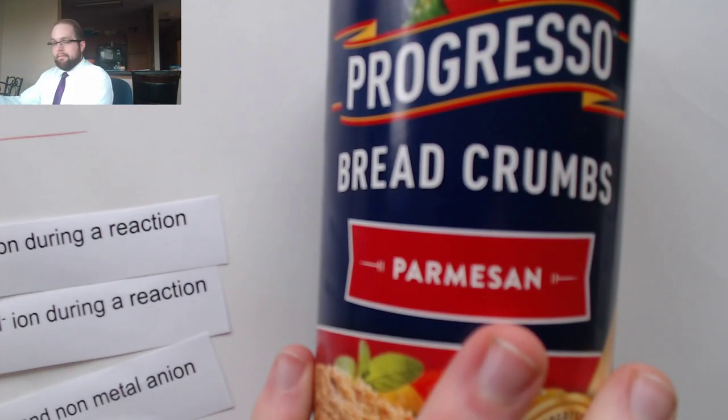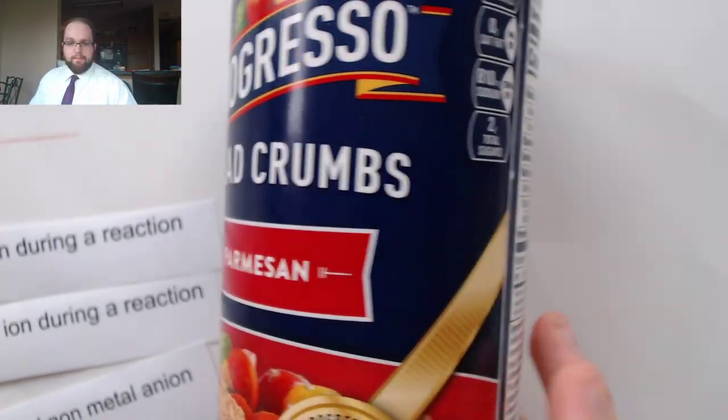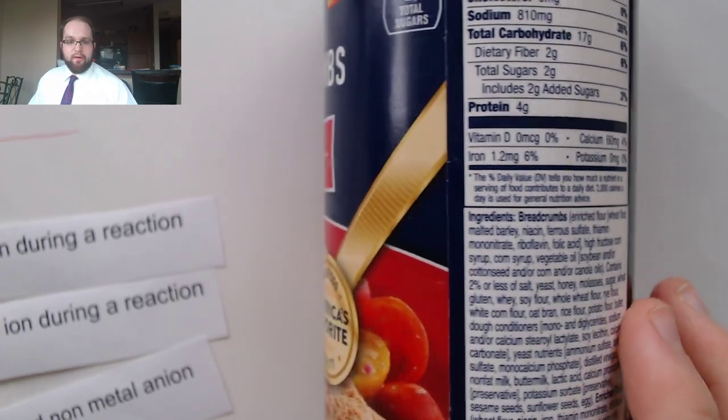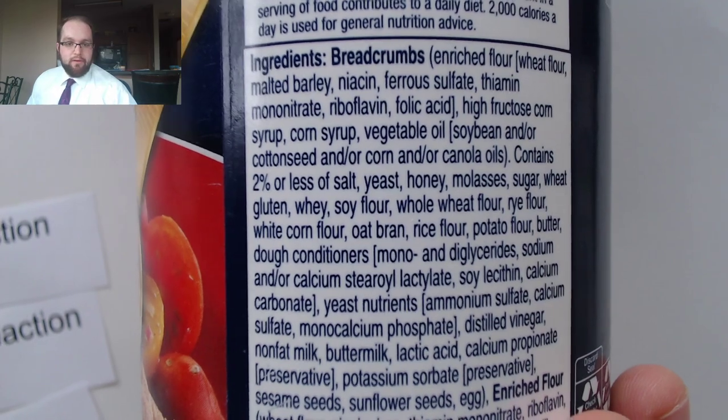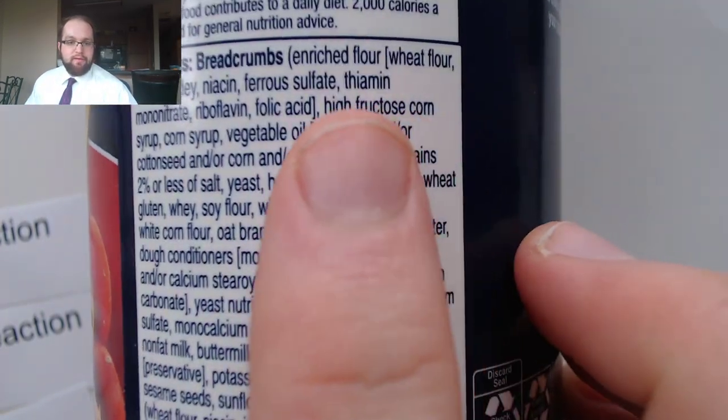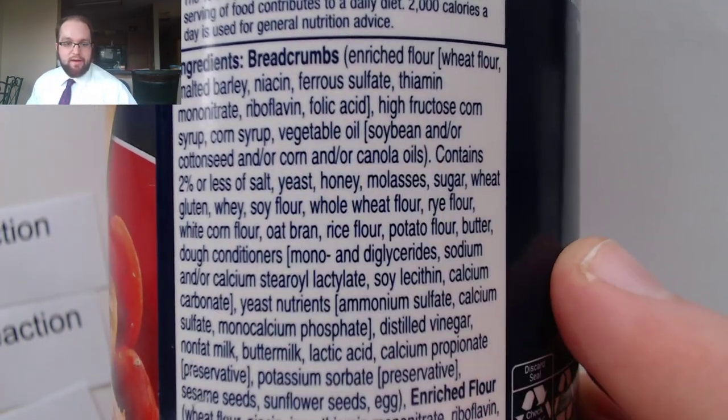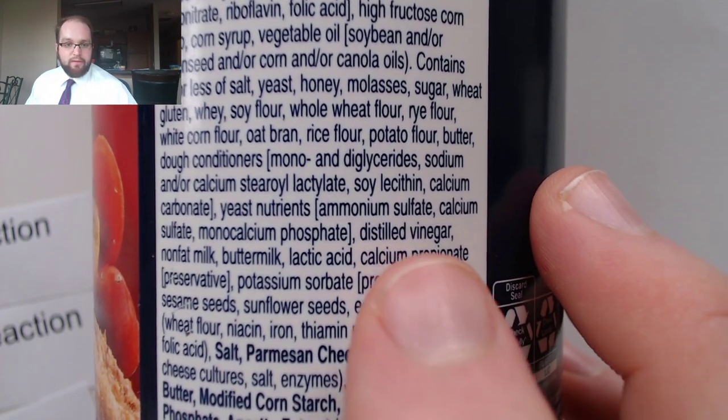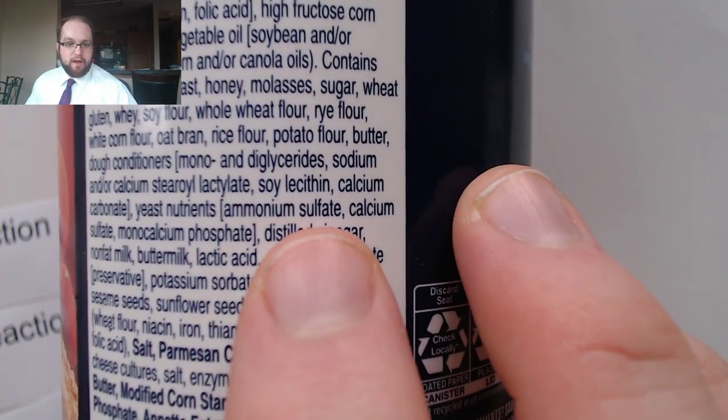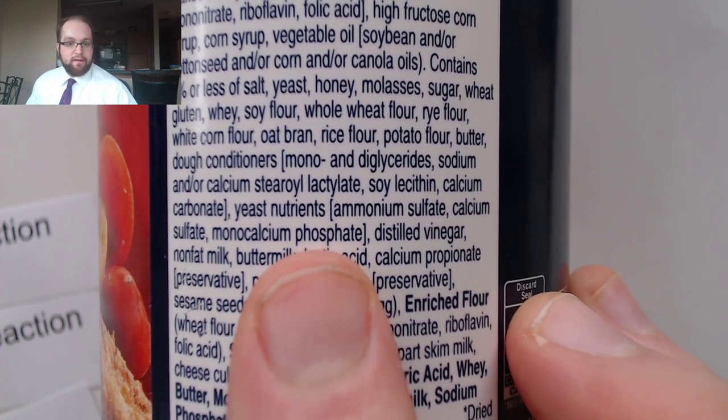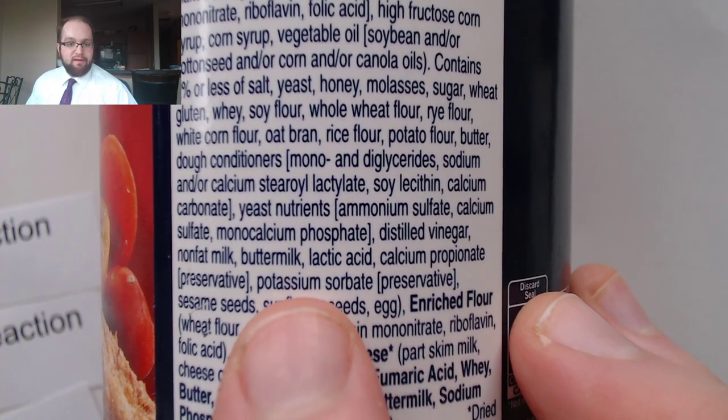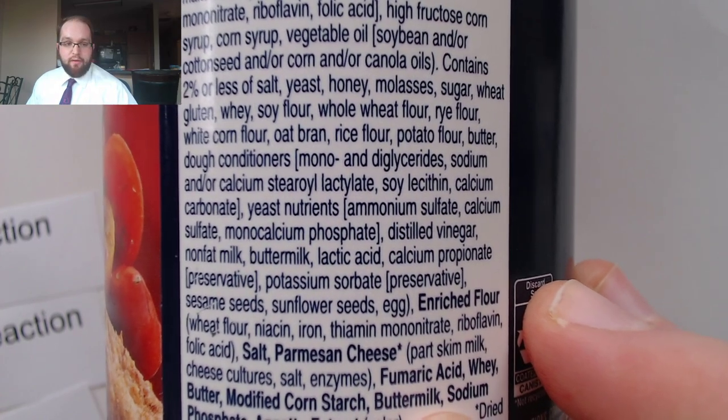Let's take a look at a couple other different examples. So for example I've got some breadcrumbs here. I was making some meatballs earlier. If you look at these ingredients there's a lot of stuff on here but you can find a lot of different things. We see some acids like folic acid and you see a bunch of other different salts here as well. Ammonium sulfate, calcium sulfate, monocalcium phosphate, lots of different things. Potassium sorbate. These are all examples of salts.